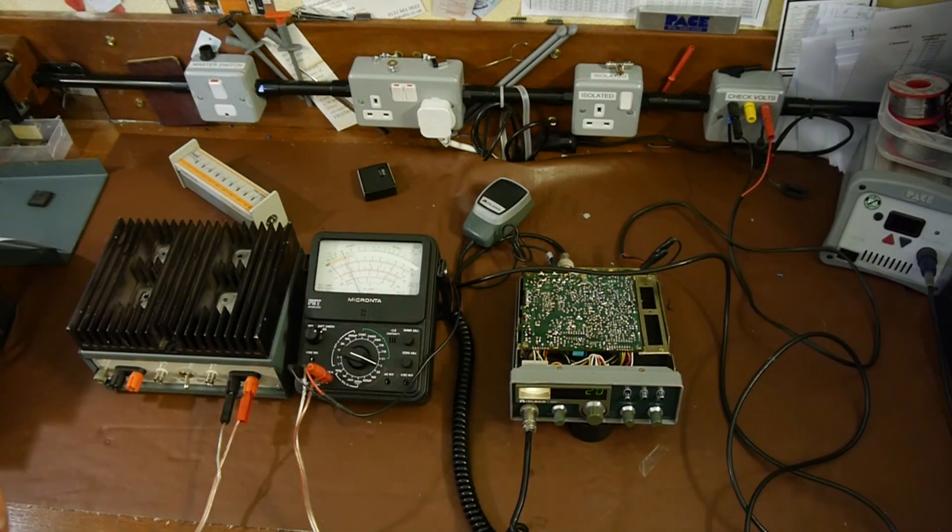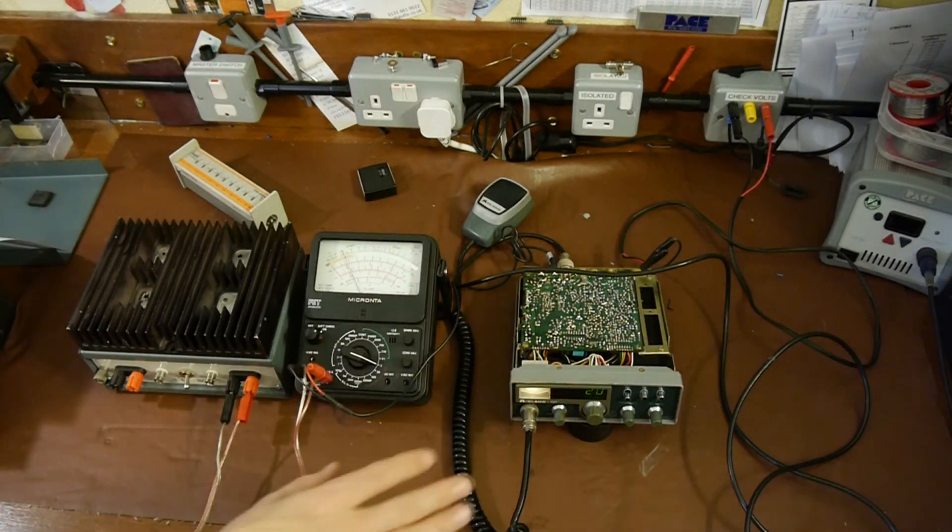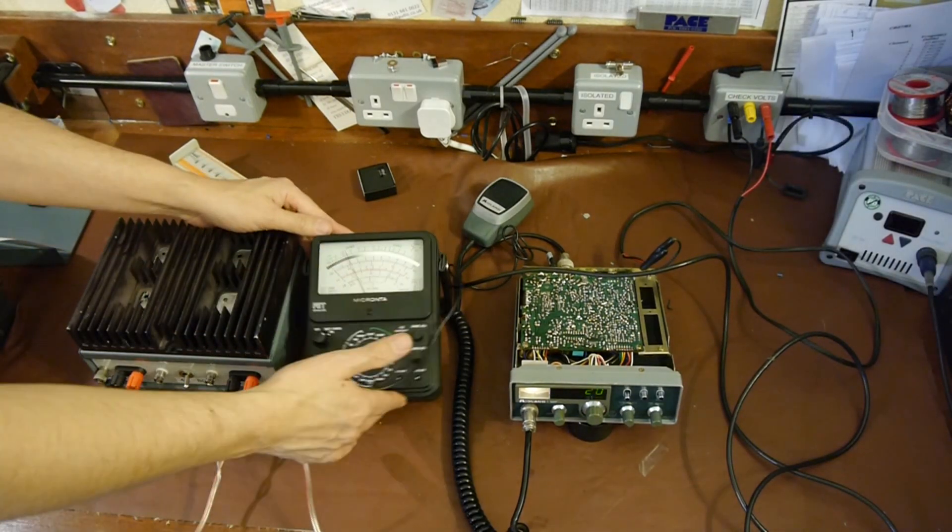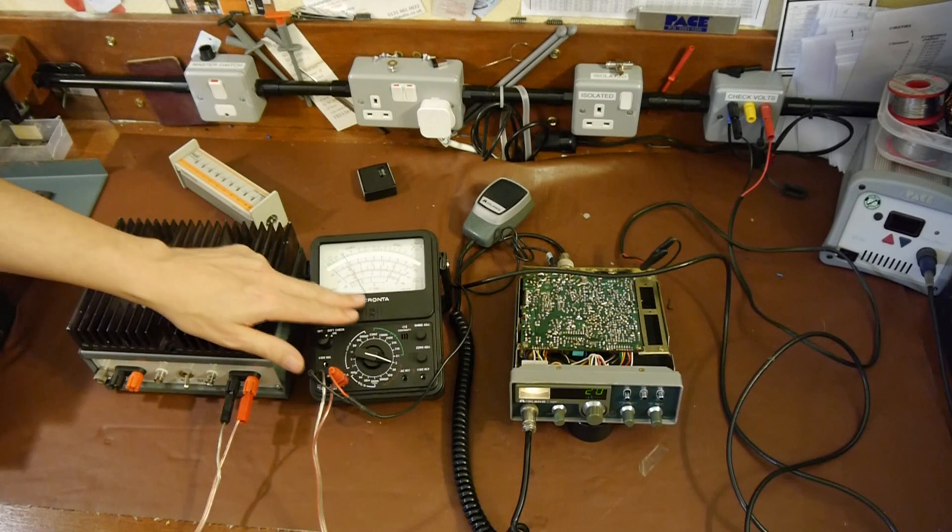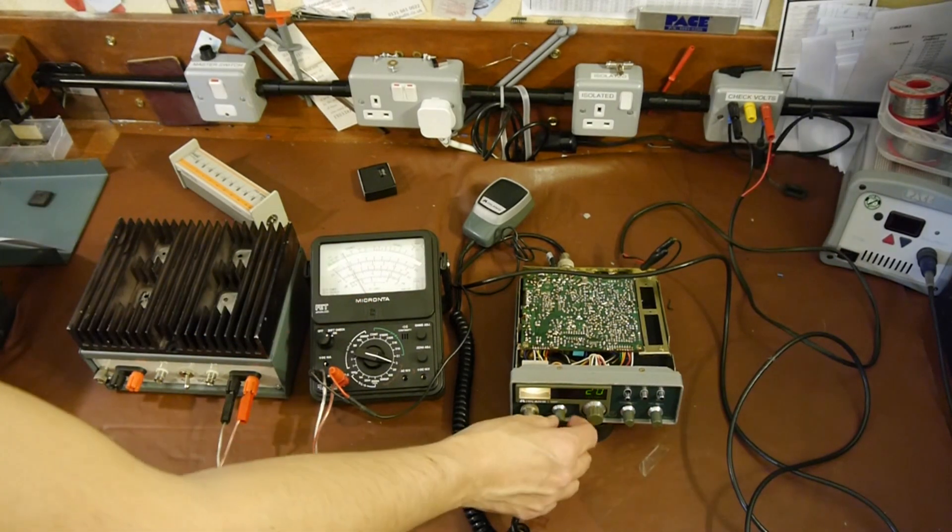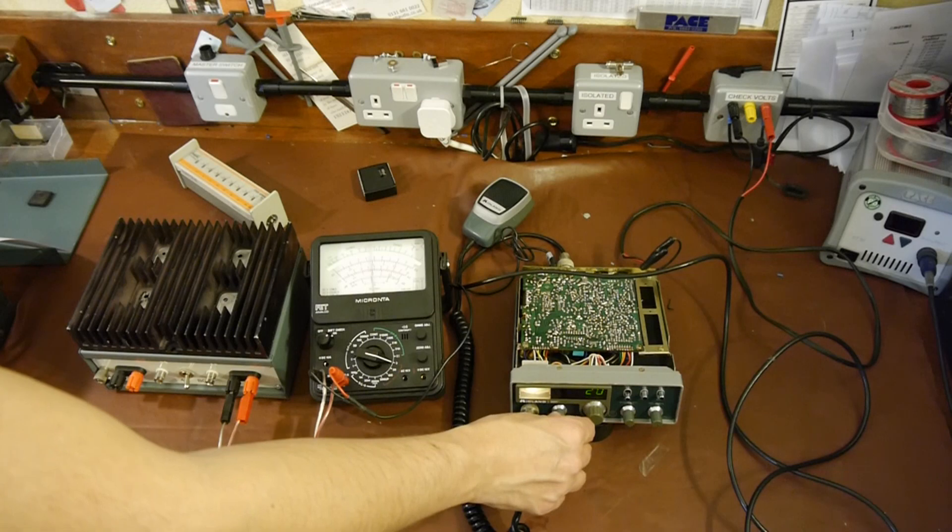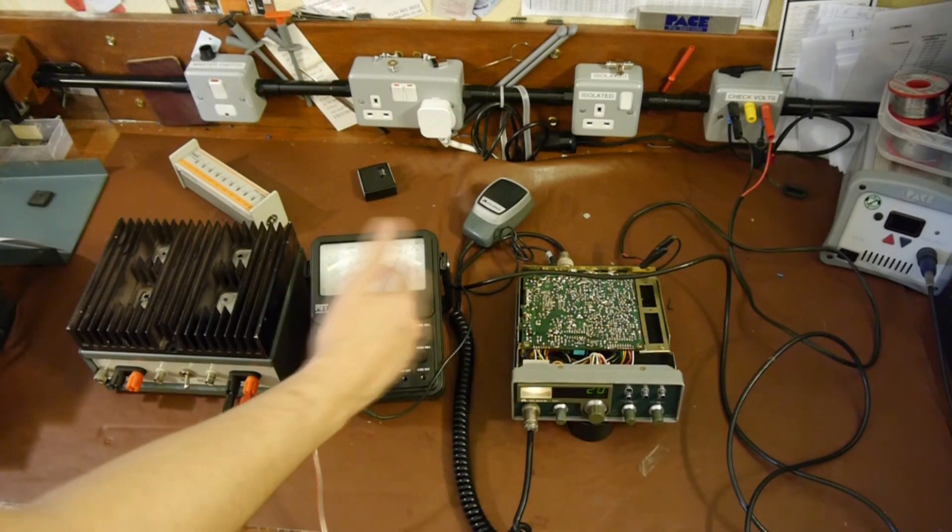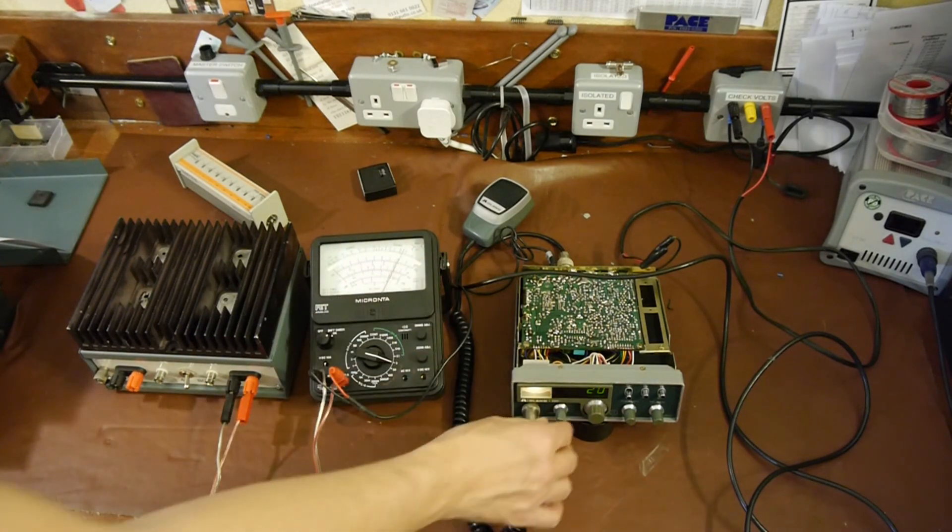Now when we plug the meter in, of course, the speaker goes silent because it's been taken out of circuit. But I don't know if you saw that, I was probably stood in the way, but the needle has now gone up to a certain level. If we turn the volume up on the speaker, the output volume of the transceiver, you can see that as we turn the volume up, the AC input to the voltmeter goes up.